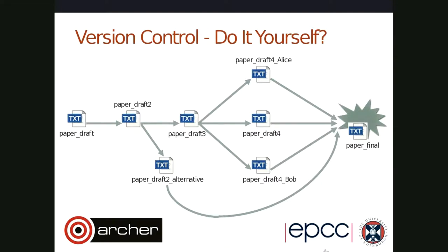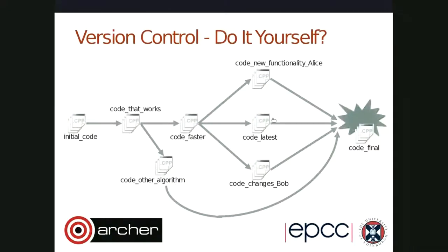It gets a lot more complicated when you come to code. You have an initial code file that works, then you make a version that goes faster, and try a totally different algorithm in another version. Colleagues write and contribute code, and finally there's a lot to be combined — not just one file like a document but a whole directory of files with different functionality that need to be compiled into one or more executables or libraries.